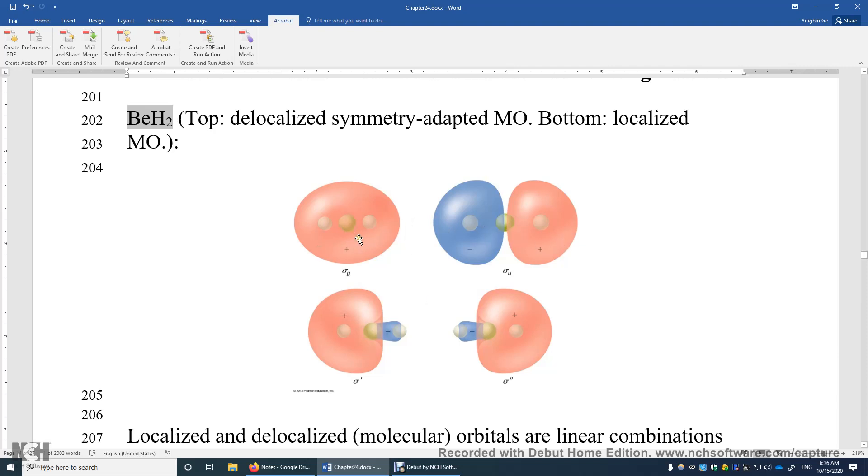So now you can clearly see on top, the MOs retain the symmetry of the molecule. On the bottom, there's no such symmetry. On top, this bonding orbital is delocalized over the entire molecule.